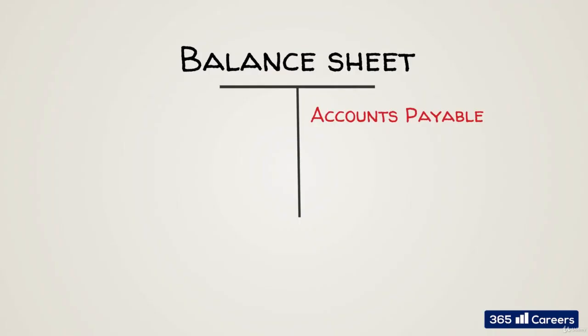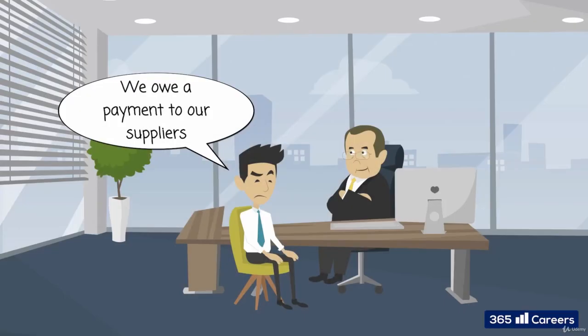Accounts payable are one of the most important items on the liability side. When a company buys raw materials for its production process, it registers the amount in accounts payable until the actual payment has been made. The firm owes its supplier an amount of money because it received the goods. Accounts payable includes payments owed to suppliers for other goods and services, not just raw materials.